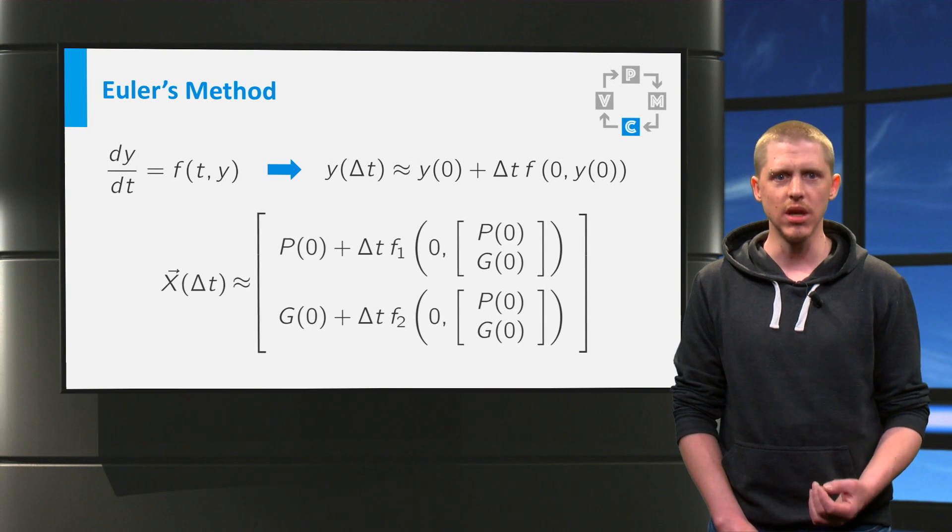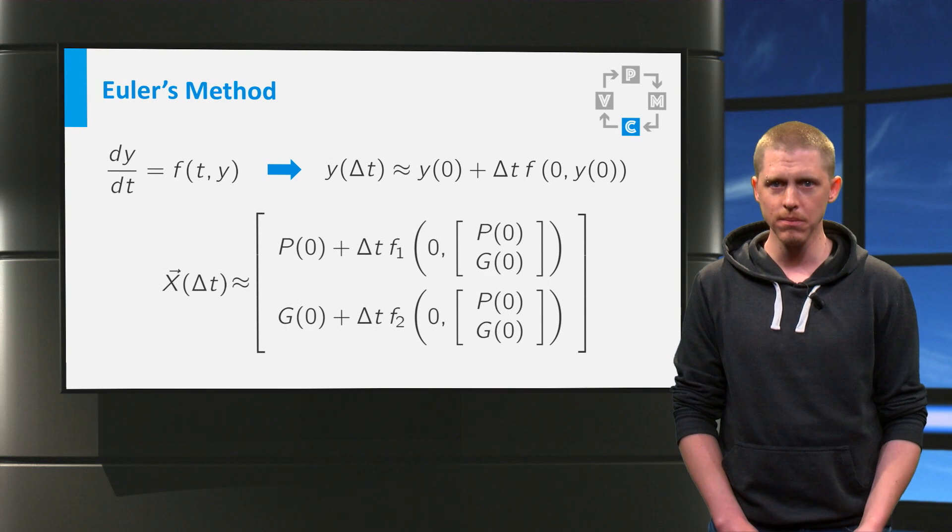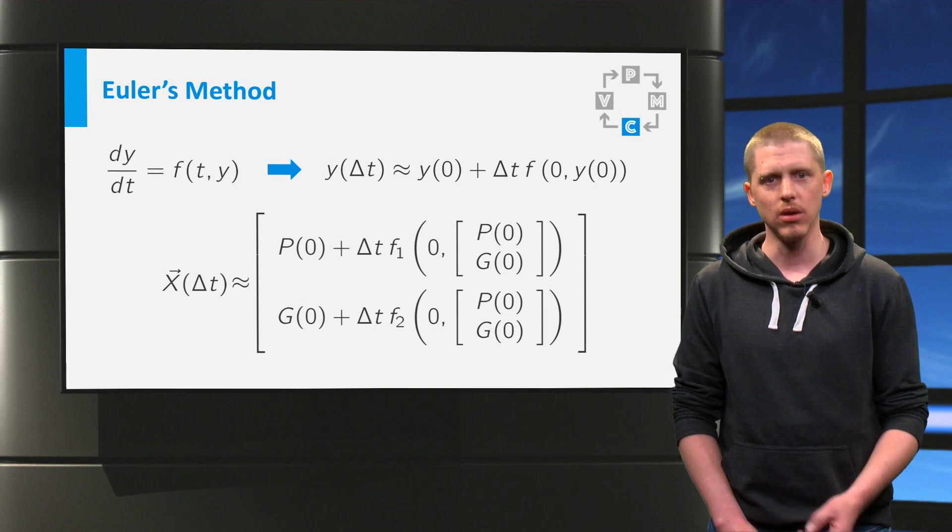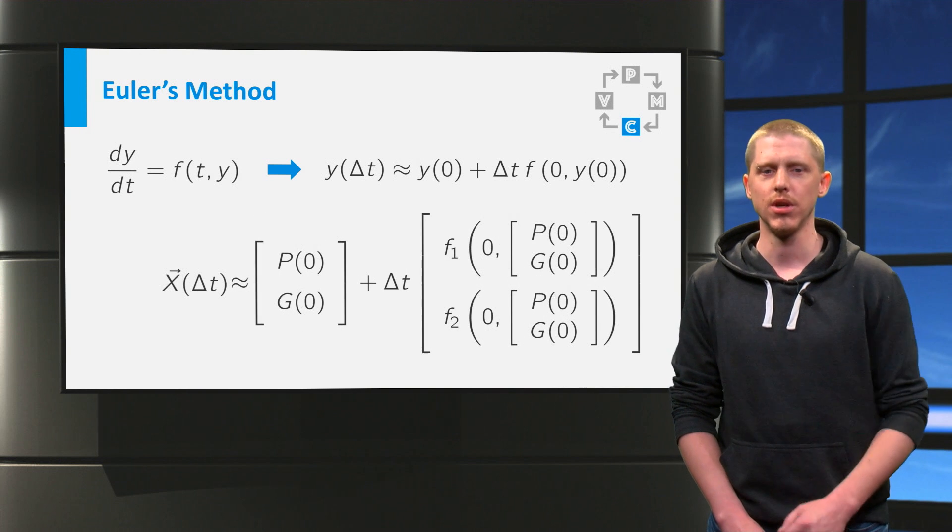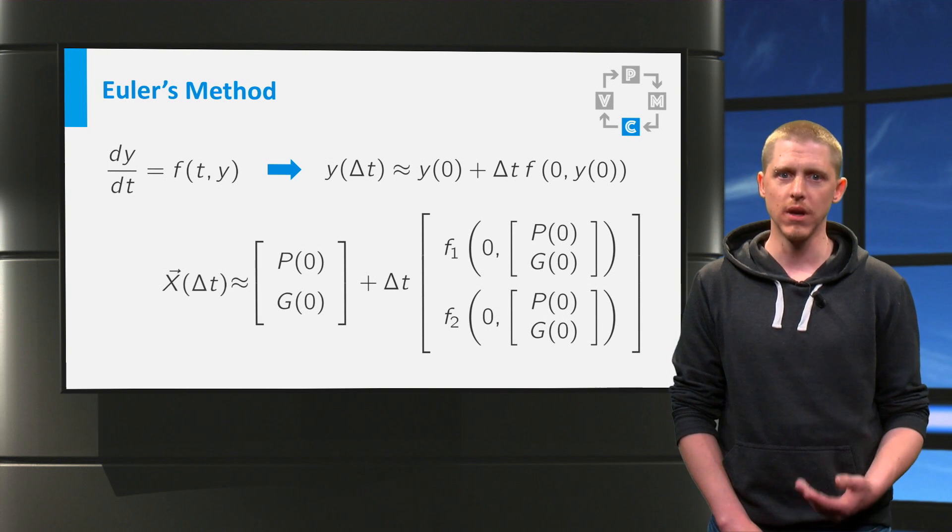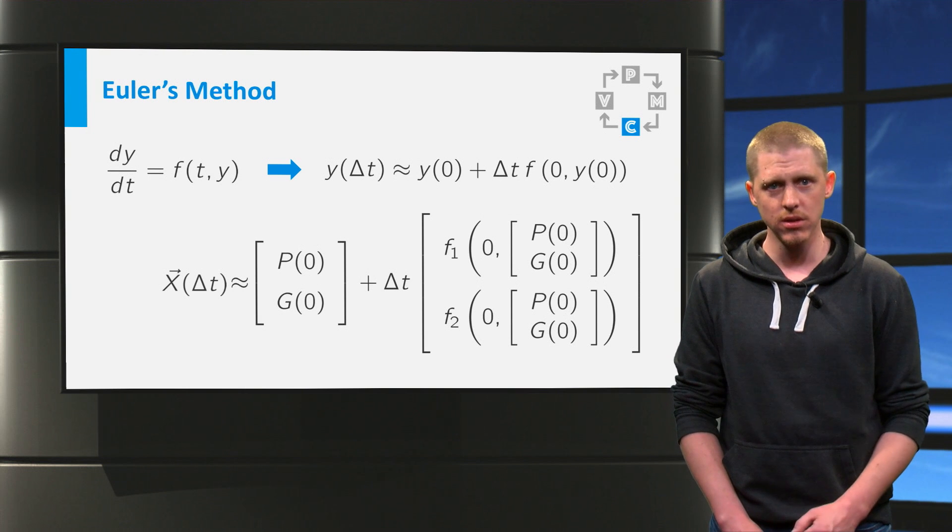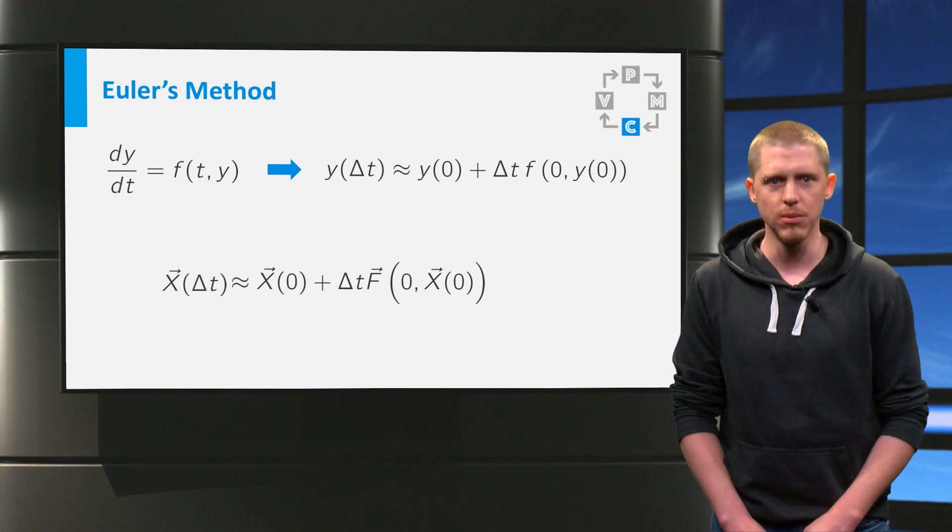Note that we also need g at zero to calculate the next p and p at zero to calculate g. Splitting the vectors gives you this equation. And using the definition of the vector functions f and x, the equation even further simplifies.